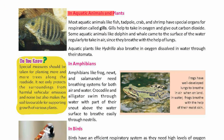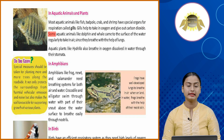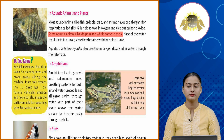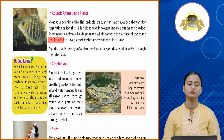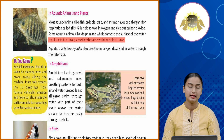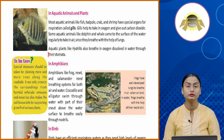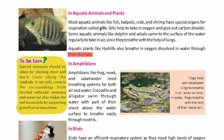In aquatic animals and plants: most aquatic animals like fish, tadpole, crab, and shrimp have special organs for respiration called gills. Gills take in oxygen and give out carbon dioxide. Some aquatic animals like dolphin and whale come to the surface regularly to take in air since they breathe with the help of lungs. Aquatic plants like hydrelia breathe in oxygen dissolved in water through their stomata.